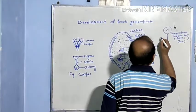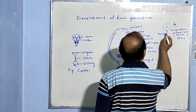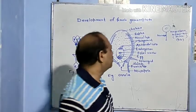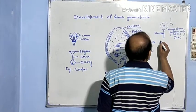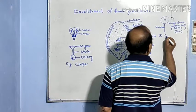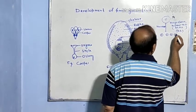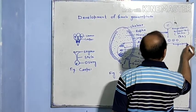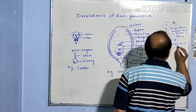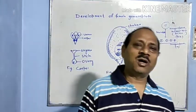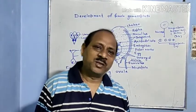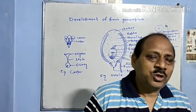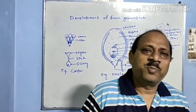The megaspore mother cell undergoes meiotic division and forms four haploid megaspores. These are produced by meiotic cell division, so they are haploid because in meiotic division the number of chromosomes is reduced to half that of the parent cells.